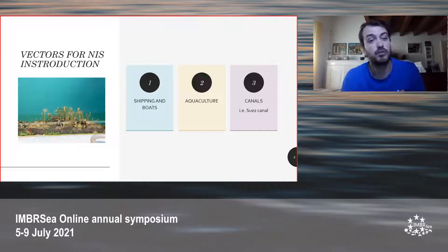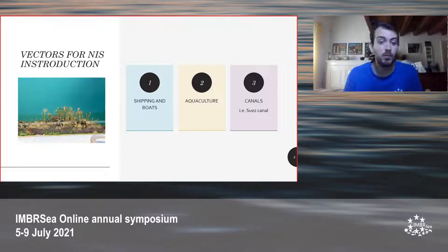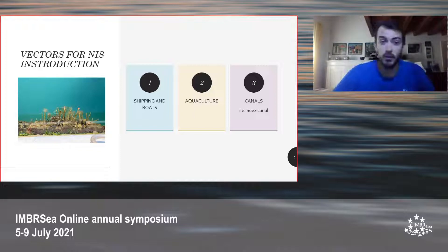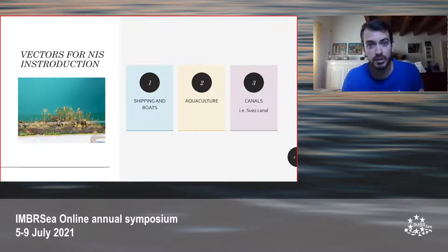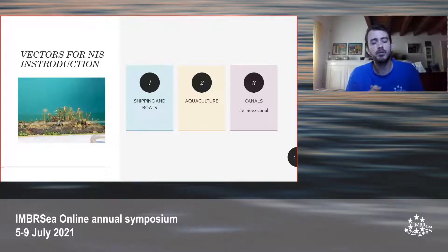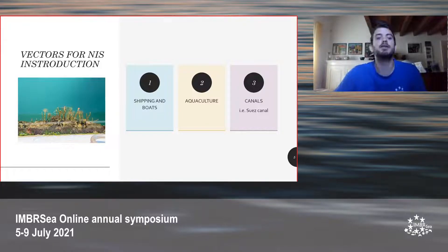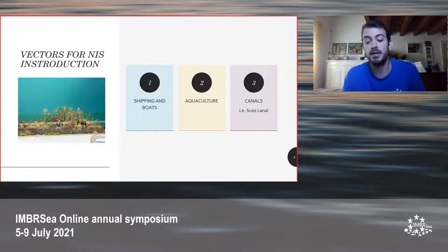What are the vectors for NIS introduction? Shipping and boats, aquaculture, and canals. The most important one is shipping and boats. Nowadays boats can reach from one end to the other end of the world. Species are carried on the hull of the boat — on the bottom, species attach to the substrate and get carried on — or for example in the ballast waters, the waters that provide the boat with buoyancy and are then released in the recipient region. Aquaculture is another very important vector, because if it is not managed in the right way, some species can go out of the premises of the aquaculture and get into the environment uncontrolled.